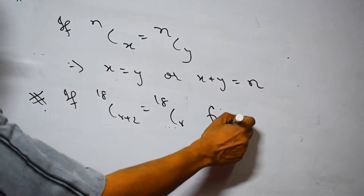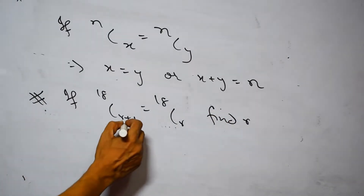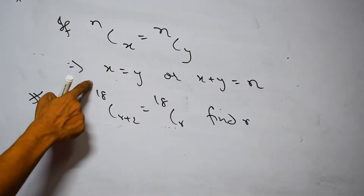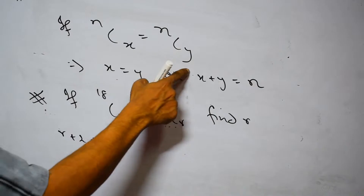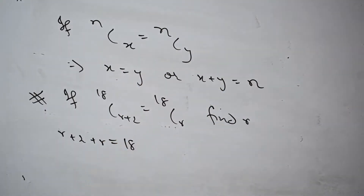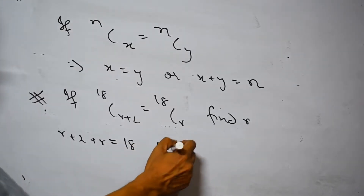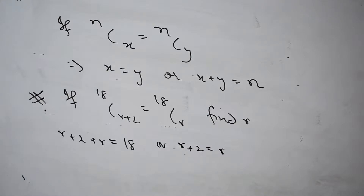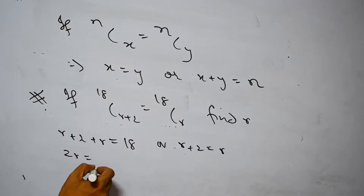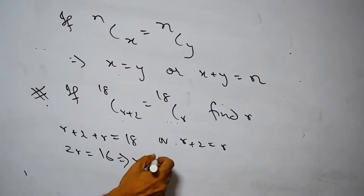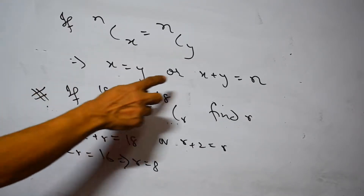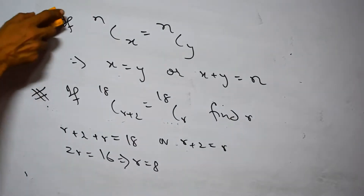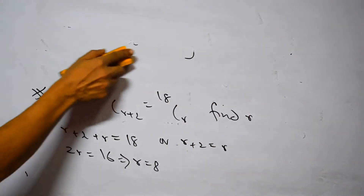To solve 18C(r+2) equals 18Cr, we apply the relation. Since r plus 2 equals r is not possible, we use x plus y equals n: (r+2) plus r equals 18, giving 2r equals 16, so r equals 8. In most cases we use x plus y equals n; x equals y is checked but often not possible.